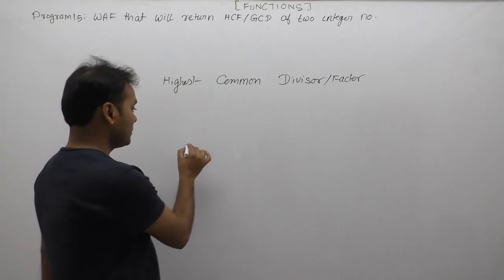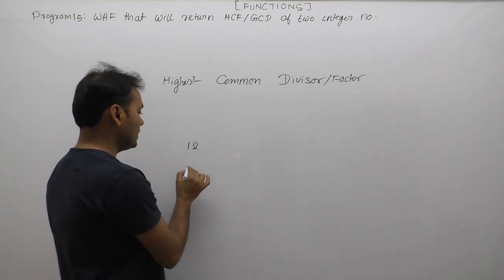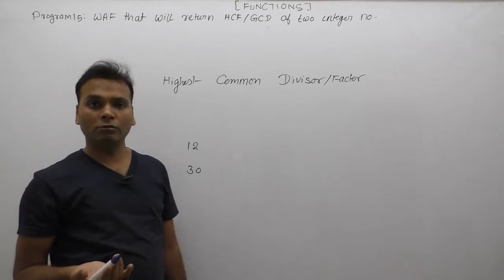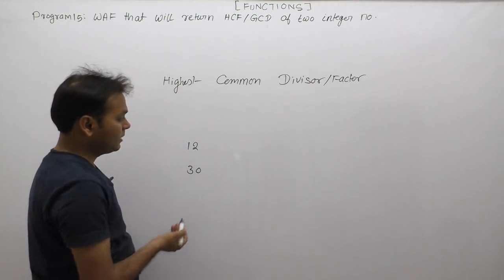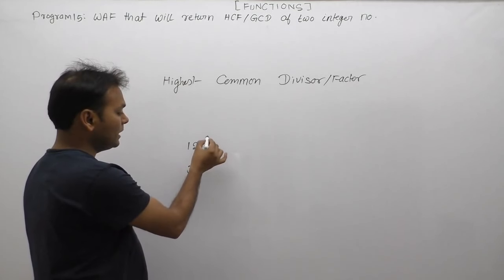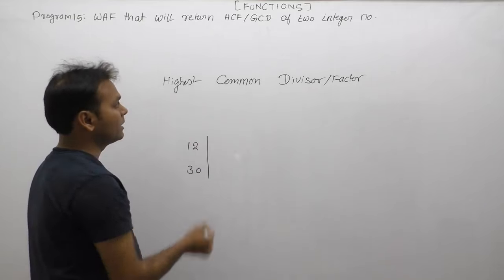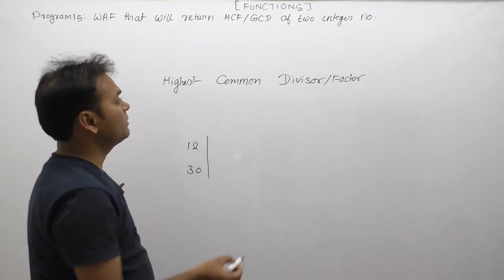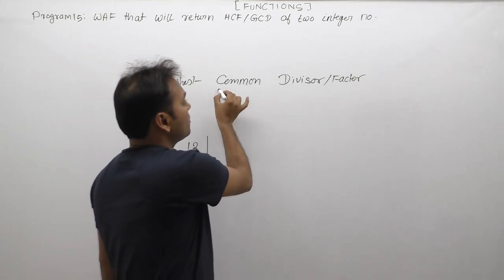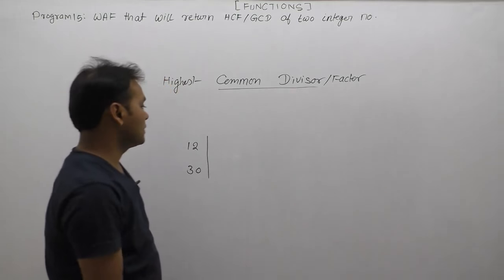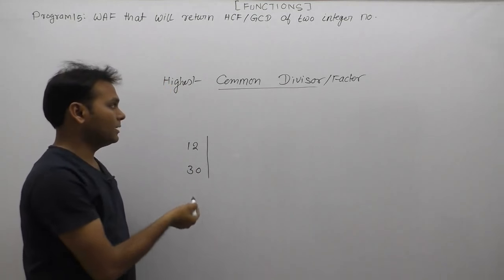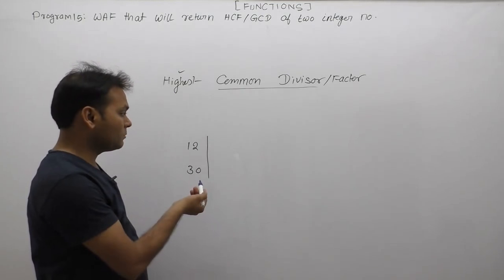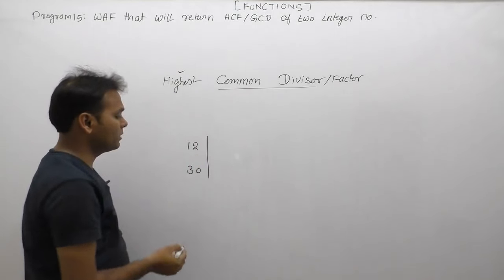For example, suppose we have two numbers: 12 and 30 — the same example we discussed during loops. For these two numbers, 12 and 30, we need to find out the Highest Common Divisor. First, find out what the common divisors or common factors are between 12 and 30, and then find the highest among them.